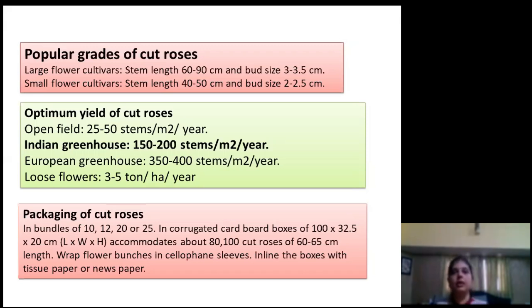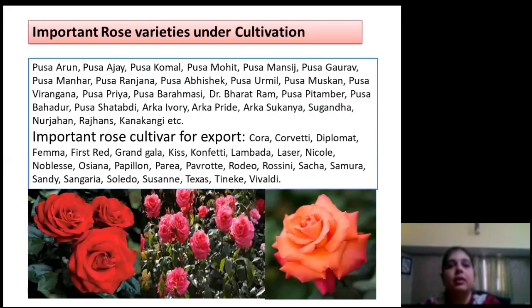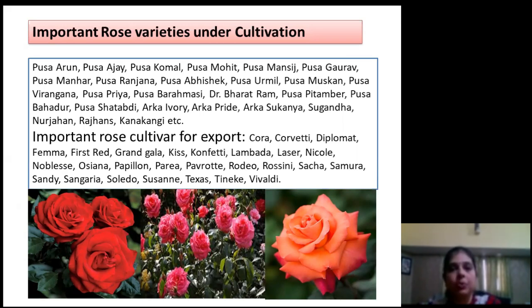Important varieties under cultivation in India include Pusa Arun, Pusa Ajay, Pusa Komal, Pusa Mohit, Pusa Mansich, Pusa Gaurav, Pusa Manhar, and Pusa Ranjana. For export purposes, First Red, Grand Gala, Kora, Corvetti, and Confetti are largely being produced.